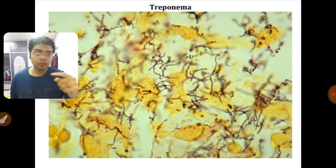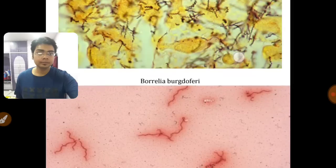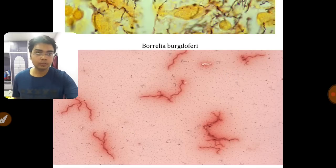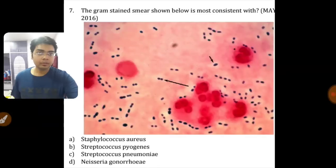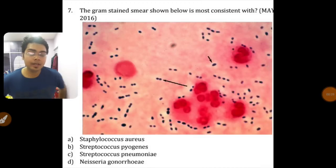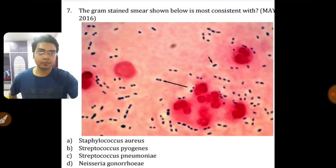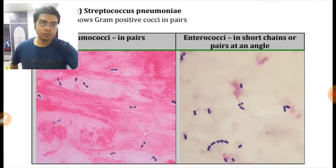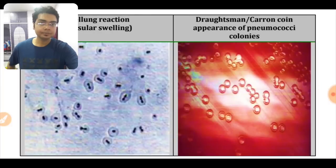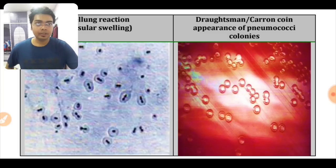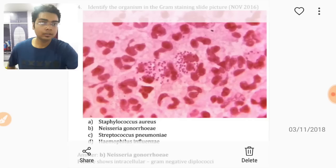Here are Treponema showing severe coiling — you can see from this picture the severe regular coiling. This is Borrelia burgdorferi — not as severely coiled, with open coil-like structure. And here again is Leptospira interrogans with its hook-like ends. In this next gram stain picture you can see blue-stained gram-positive organisms arranged in pairs — from the clinical scenario the answer is Streptococcus pneumoniae. Pneumococci appear in pairs, and the colony shows the characteristic draughtsman/carom coin-like appearance.